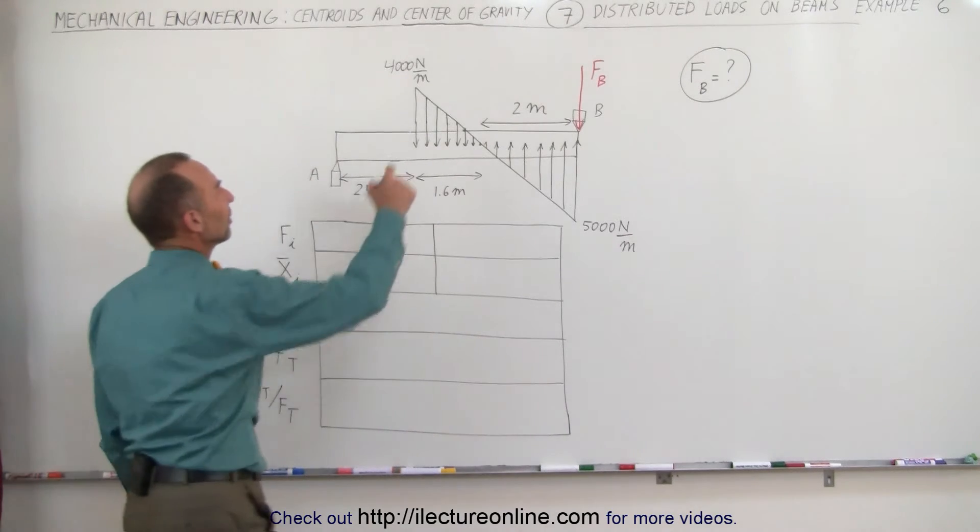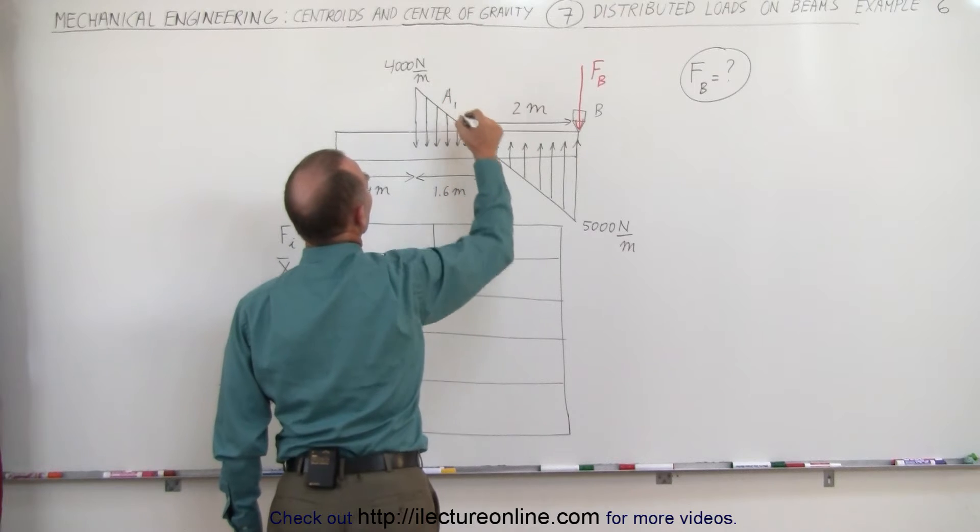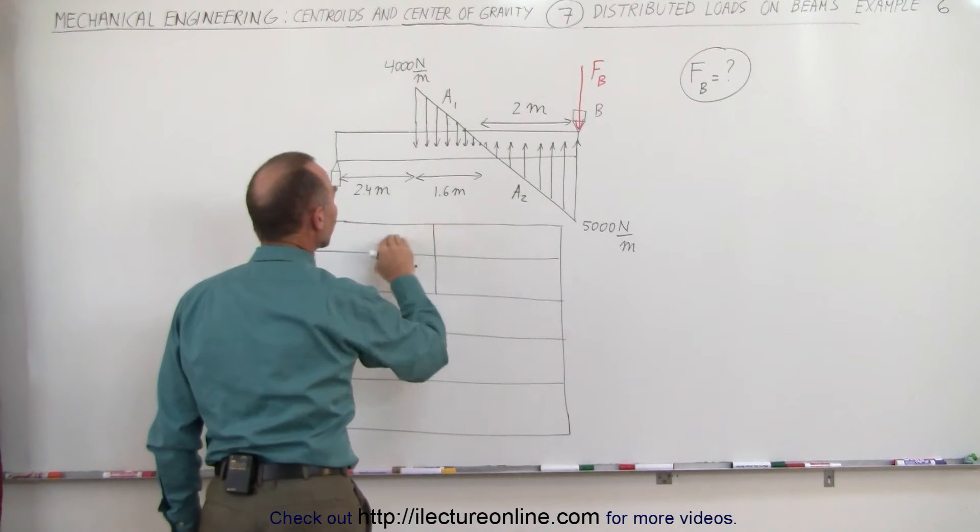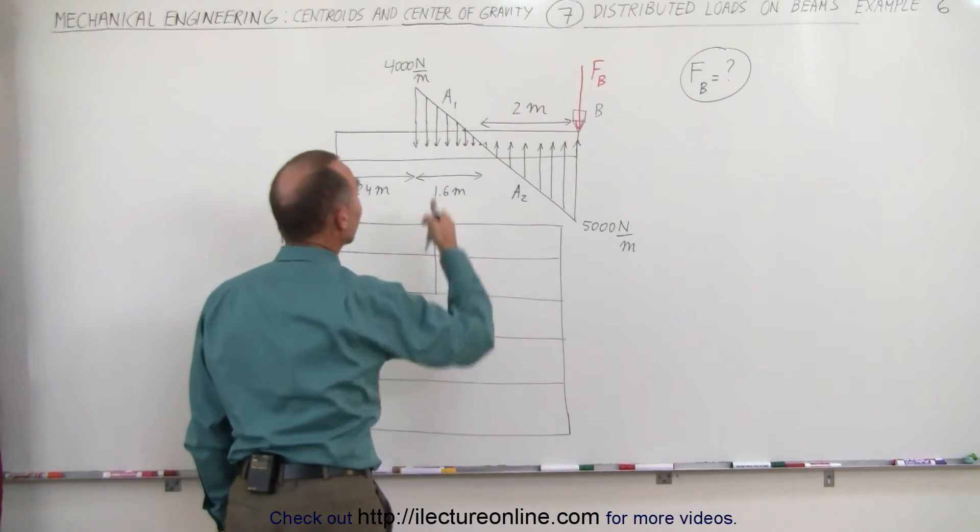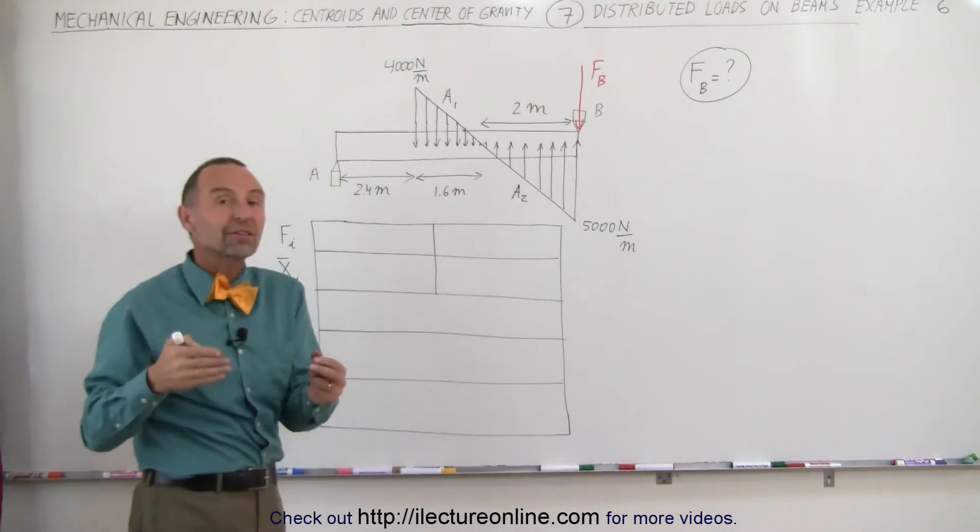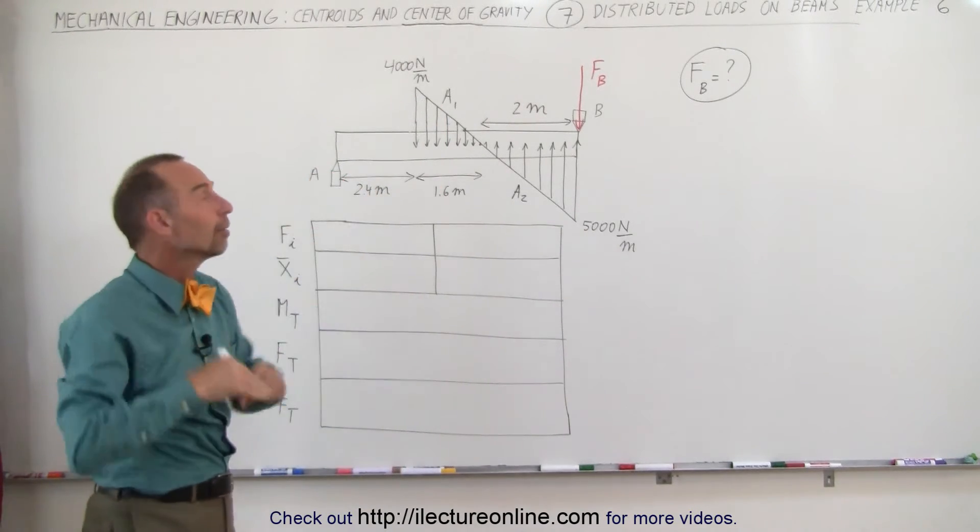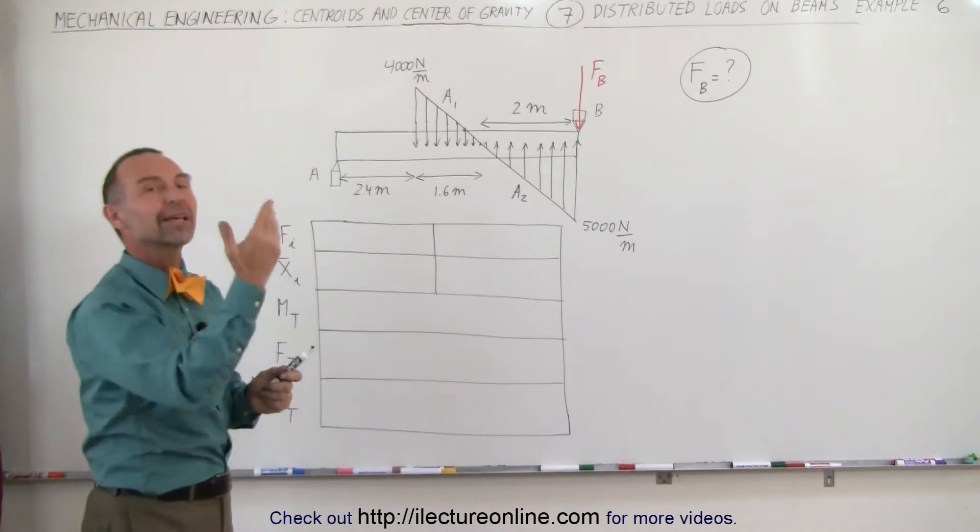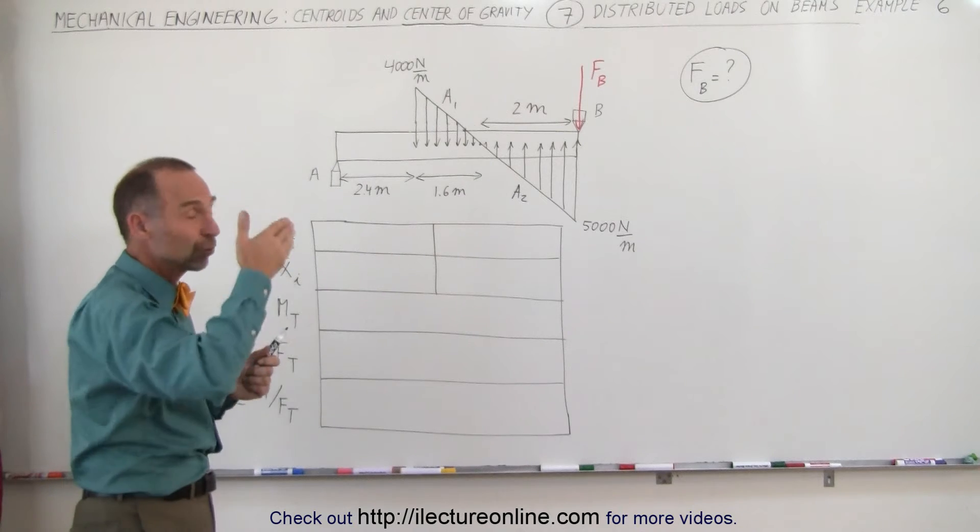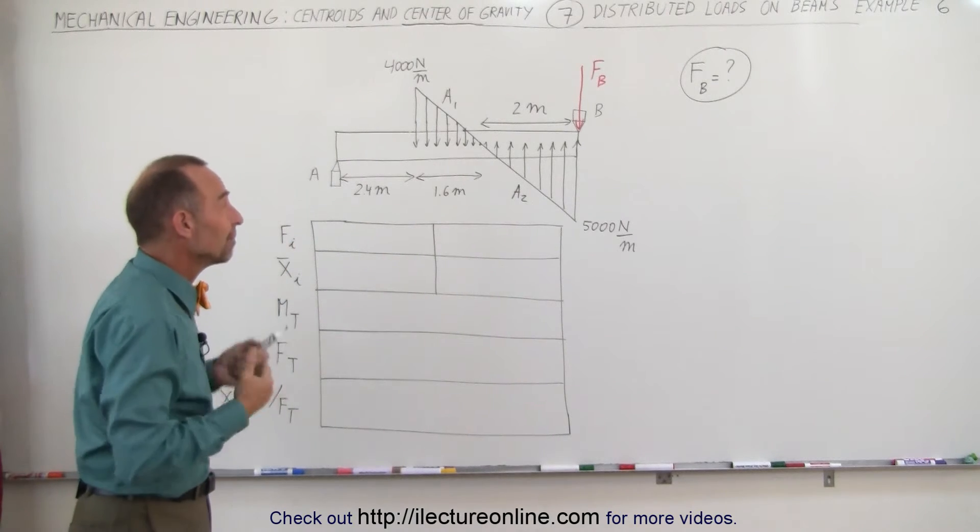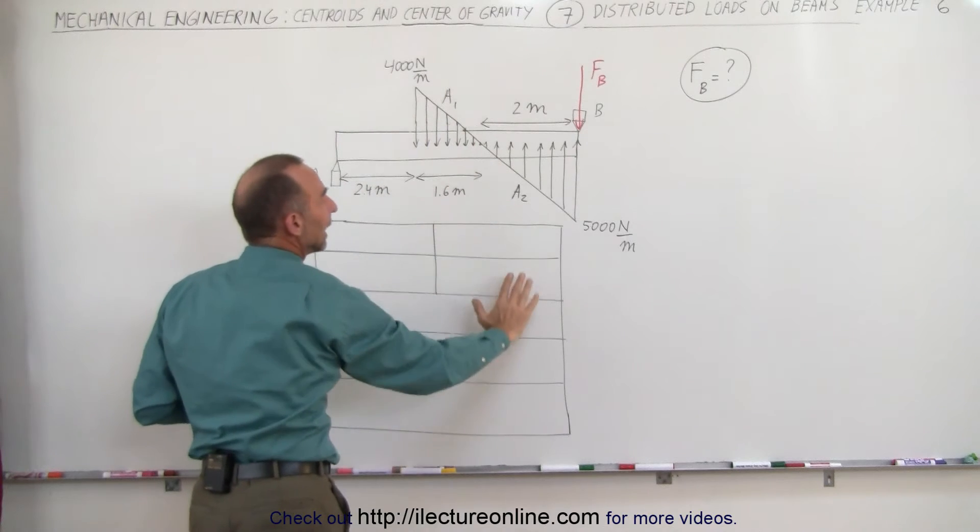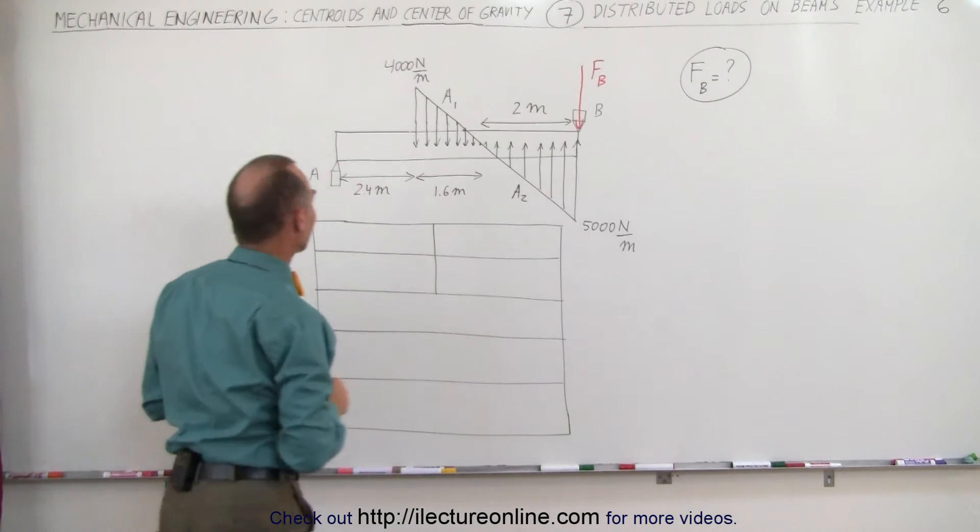Let's find the total force contributions. If this is called A1, area 1, and this is A2, area 2, A1 represents a positive load because it's a normal load on the beam. A2 can be considered a negative load because it's pushing up against the beam. It makes more sense to think about A1 representing a positive load and A2 representing a negative load.